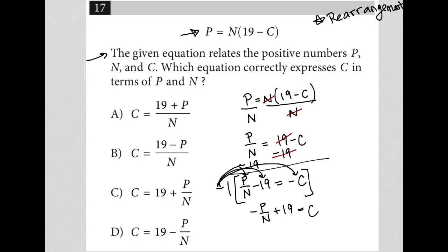Looking at my answer choices, it looks like in each case, the 19 is in front of the P and N. So I'm going to just rewrite this as 19, my positive 19 from here, and then minus P over N, my negative P over N from there is equal to...